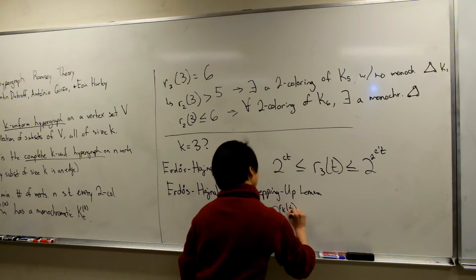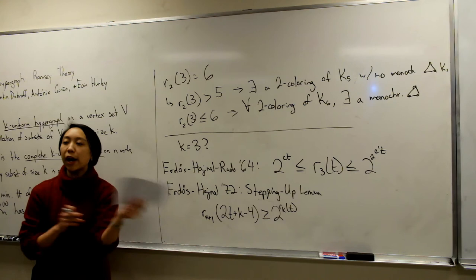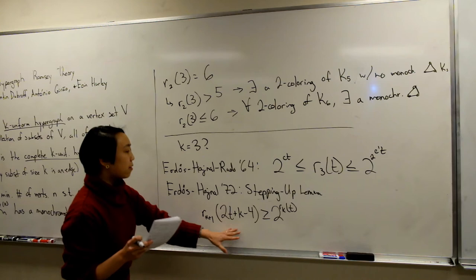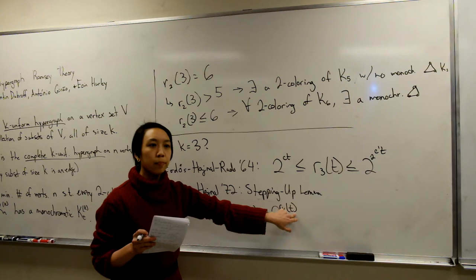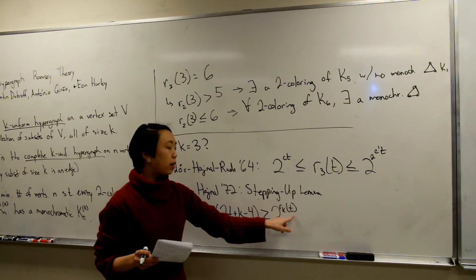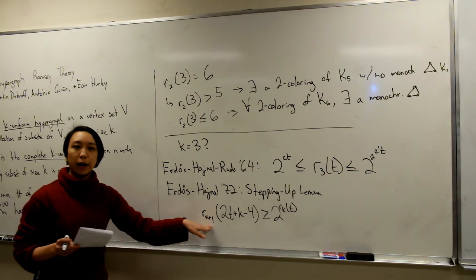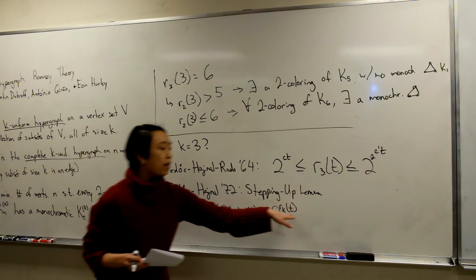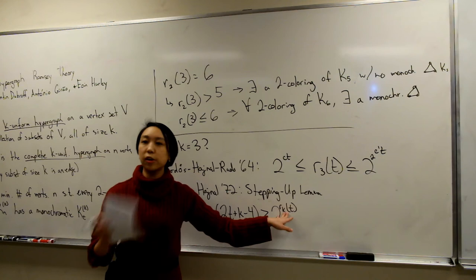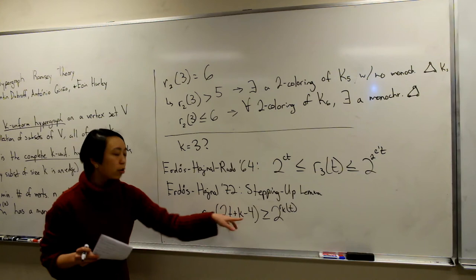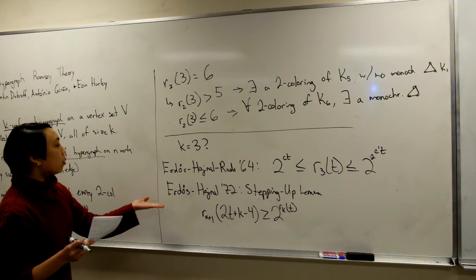By applying the stepping up lemma to R_3(T), we get that R_K(T) is at least a tower of height K−1 of CT, where the tower function is defined recursively: tower of height i is 2 to the tower of height i−1. Erdős-Hajnal-Rado also showed an upper bound with a gap of one tower height. So if we could close the gap for K=3, showing R_3 behaves like a double exponential, it would close the gap for all higher uniformities.